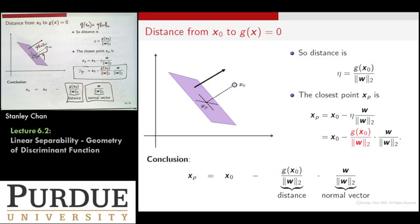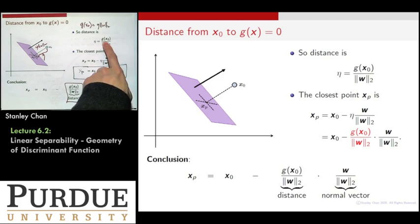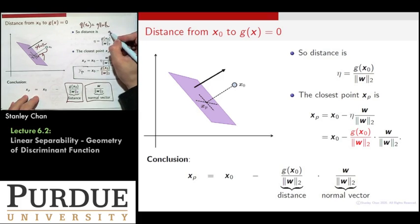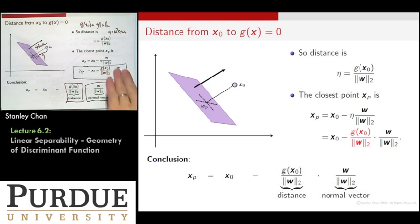So when people ask: given a dataset with two groups of data points and a plane, what is the margin? You go through the dataset, find the point closest to your plane, and measure that distance using this formula. You just put all the data points through g — which is w transpose x plus w_0 — and evaluate the smallest distance from the dataset to the plane.